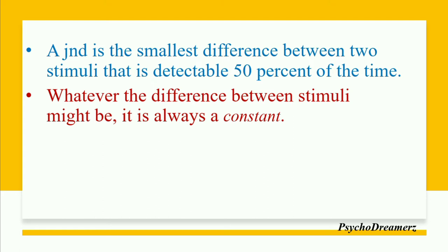Consider different shades of yellow color. At the starting point, you could detect the difference between the 1st and 2nd shade, and the 2nd and 3rd shade. But the difference became difficult to detect between the 4th and 5th shades — the lines were not clearly distinguishable. Weber says that JND is the smallest difference between two stimuli that is detectable 50% of the time.